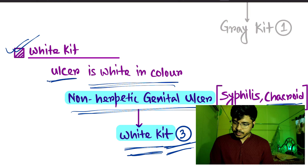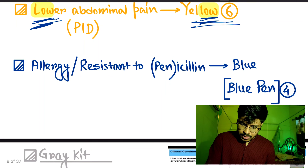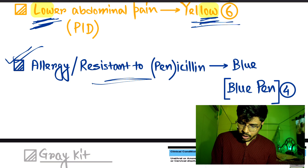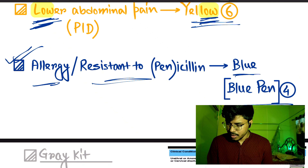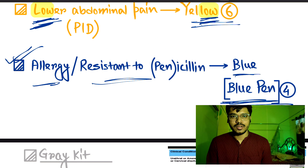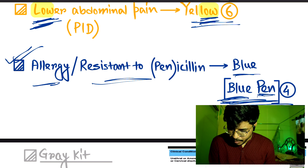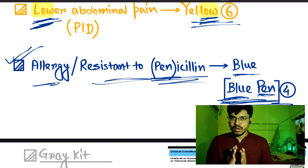When the person is resistant to penicillin or has an allergy to penicillin, then the blue kit is used. To remember this, use the mnemonic 'blue pen' — blue kit, pen for penicillin. Blue pen means blue kit is for cases where penicillin is involved.